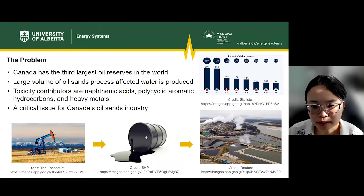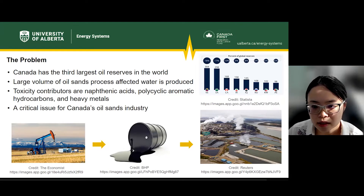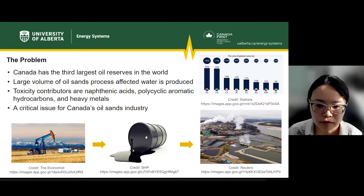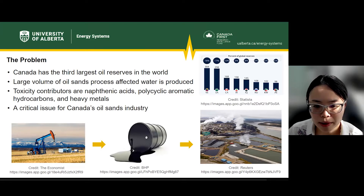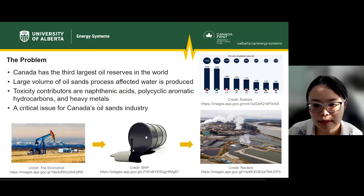During this process, a large volume of oil sands process-affected water is produced and stored on site under a policy of no release, due to its toxicity to a variety of organisms. Constituents such as naphthenic acids, polycyclic aromatic hydrocarbons, and heavy metals are the main contributors to its toxicity.